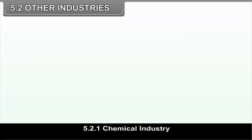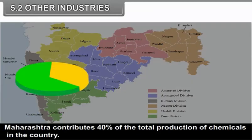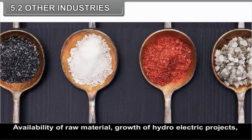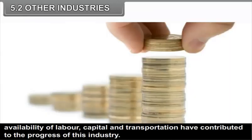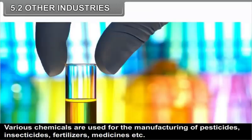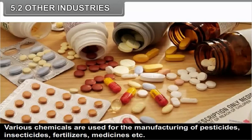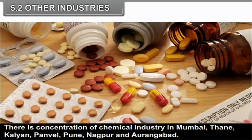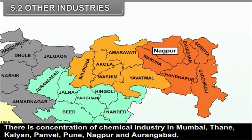5.2.1 Chemical Industry. This is one of the most important industries of Maharashtra. Maharashtra contributes 40% of the total production of chemicals in the country. Availability of raw material, growth of hydroelectric projects, availability of labour, capital and transportation have contributed to the progress of this industry. Various chemicals are used for the manufacturing of pesticides, insecticides, fertilizers, medicines, etc. There is a concentration of chemical industry in Mumbai, Thane, Kalyan, Panvel, Pune, Nagpur and Aurangabad.